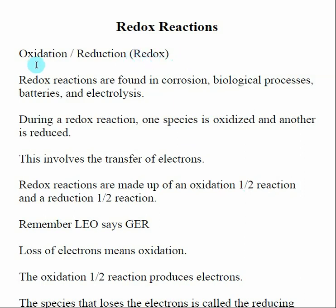A redox reaction is called that because there are two pieces: an oxidation and a reduction — that's where 'redox' comes from. Redox reactions are found all over the place. When you use a battery, there's a chemical reaction going on inside to produce electricity — that's a redox reaction. Whenever you see something rust, that's a redox reaction. Electrolysis too, like chrome plating. Redox reactions also show up quite a bit in biological processes.